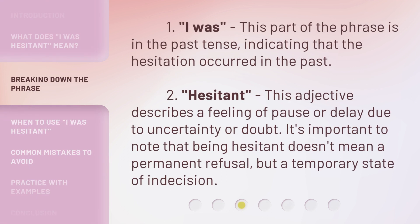1. 'I was' — this part of the phrase is in the past tense, indicating that the hesitation occurred in the past. 2. 'Hesitant' — this adjective describes a feeling of pause or delay due to uncertainty or doubt. 3. It's important to note that being hesitant doesn't mean a permanent refusal, but a temporary state of indecision.